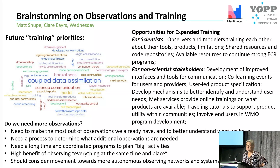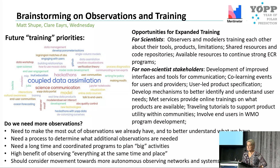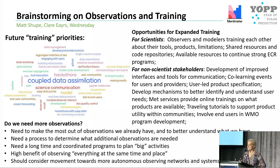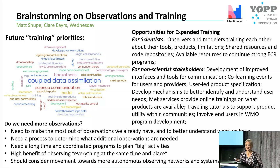We need funding to help especially early career researchers from the Global South — there is currently nobody from the Global South in the early career program. An international project going forward can provide that funding. What if the next Thomas Jung is in South Africa or Argentina? For non-scientist stakeholders: development of improved interfaces and tools for communication, co-learning events for users and providers, user-led product specification, and mechanisms to better identify and understand user needs.